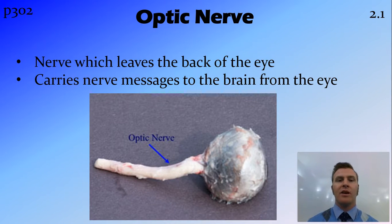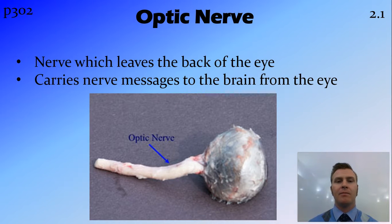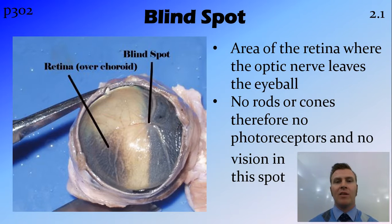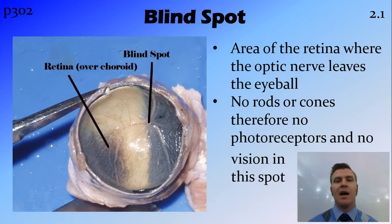The optic nerve is attached to the retina at the back of the eye and carries the message from those nerves in the retina to the brain. At the back of the eye there is an area where all those nerves come together before the optic nerve goes to the brain. This spot has no rods or cones — it's all nerve fibres — so we have no vision there, and we call it the blind spot.